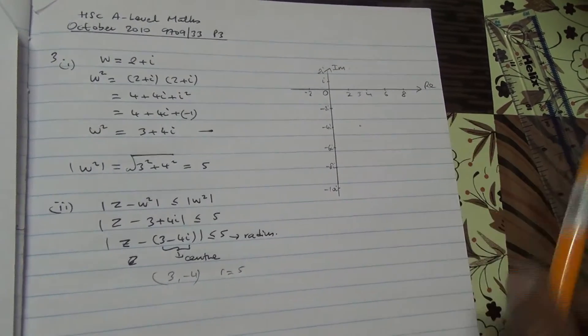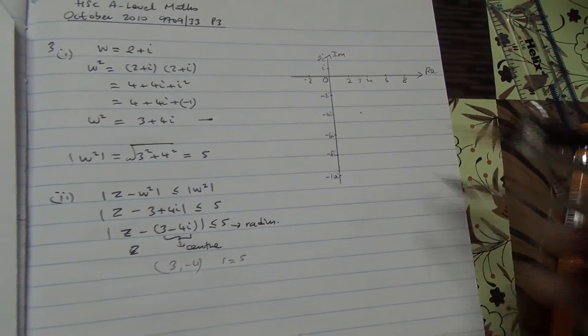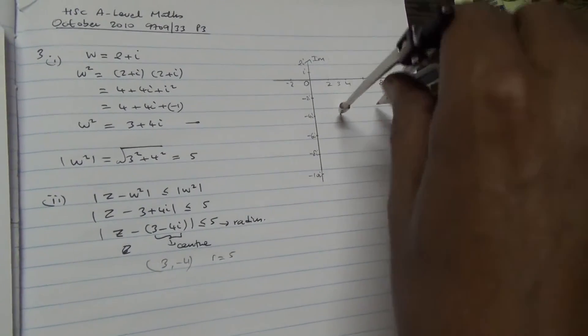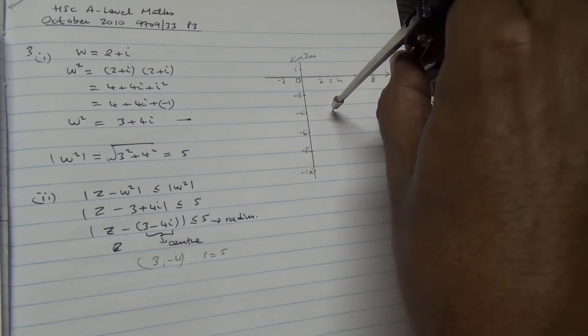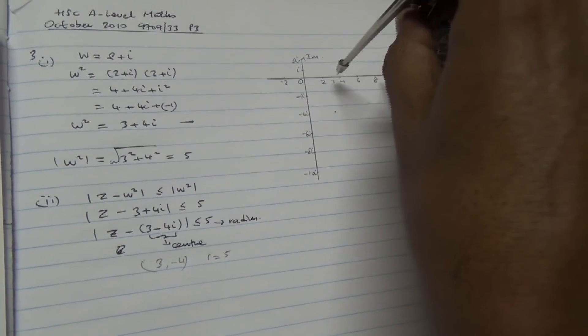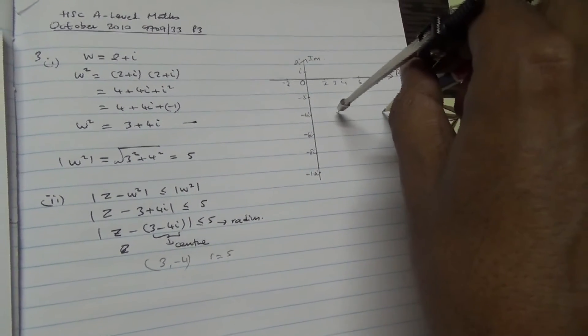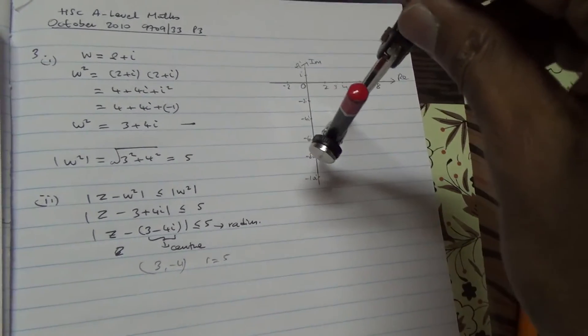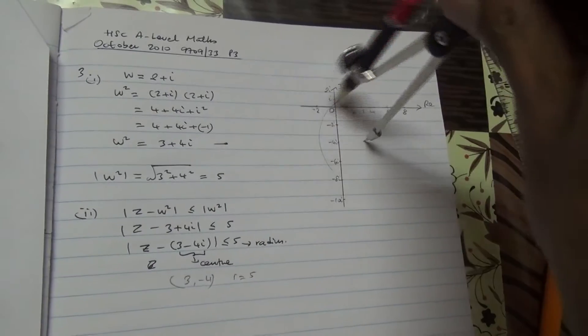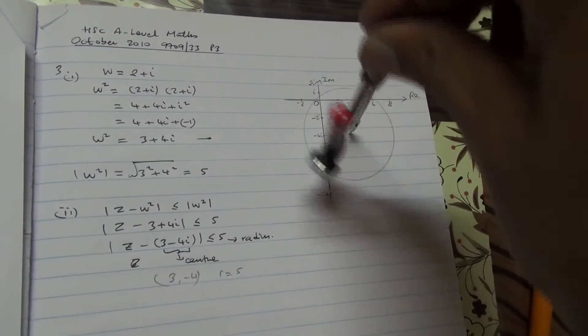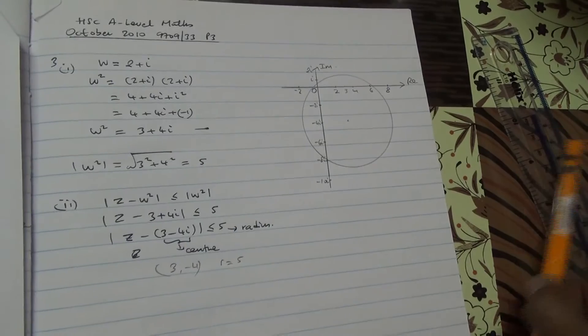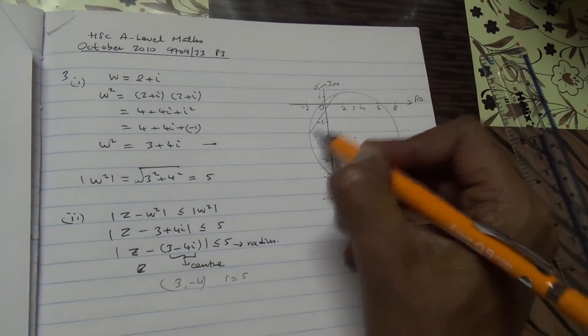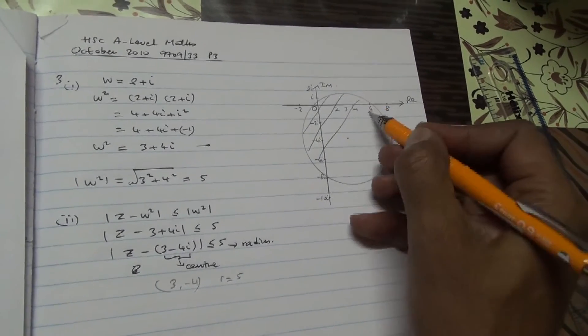So let's do it like this. Here. So we have a circle, and we need to shade the region. And the region is going to be inside because it is less or equal to 5, so inside the circle.